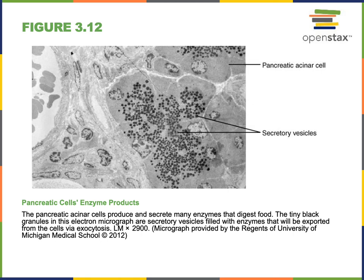An example of exocytosis is the release of digestive enzymes from the exocrine organ, the pancreas, to help with digestion. These digestive enzymes are produced inside pancreatic acinar cells. They are proteins too large to exit the cell by simple diffusion and cannot exit through facilitated diffusion either. These larger molecules get packaged into secretory vesicles and then released from the cell by exocytosis.